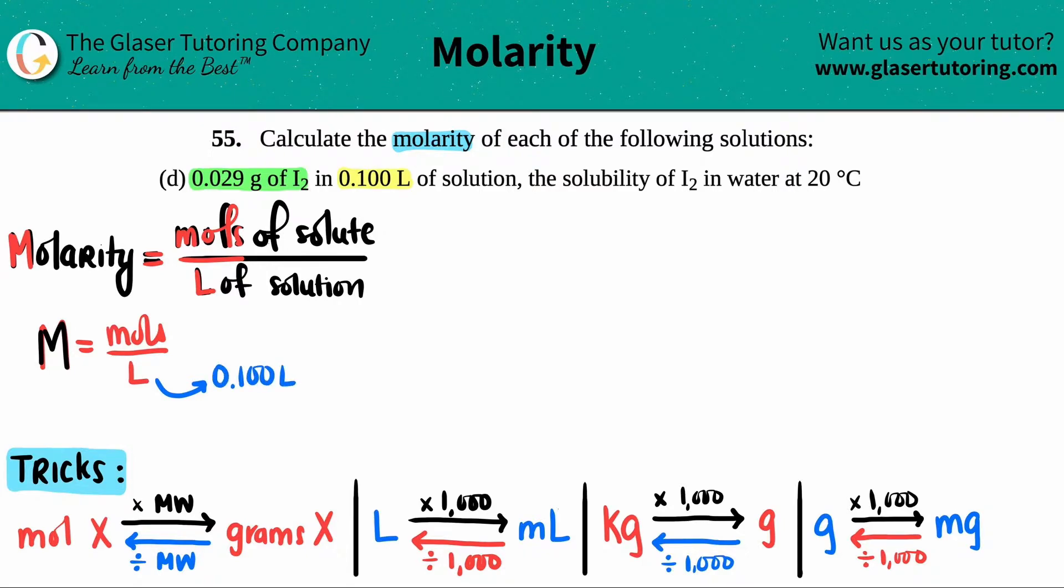I can't use this formula yet until I find the moles, so that's where we need to do some conversions. 0.029 grams of iodine I2 needs to first be converted into moles of I2.